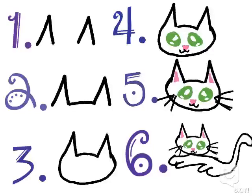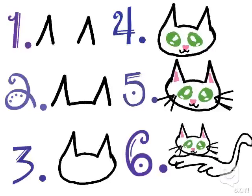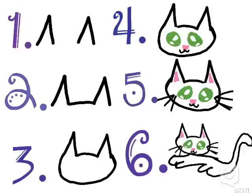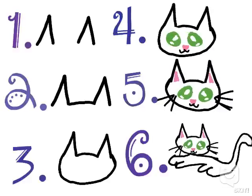How to draw a cat. Step 1: Draw two ears equal to each other.